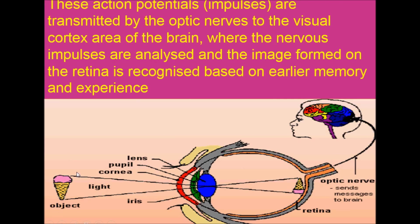Light from the object passes through the cornea and lens and is focused on the retina, after which action potentials are transmitted by the optic nerve to the visual cortex area of the brain. There, neural impulses are analyzed and the image formed on the retina is recognized based on earlier memory and experience. This was all about rods and cones — the photoreceptor cells — and the mechanism and chemistry of vision. In the next section we will be studying the structure of the ear. Thank you.